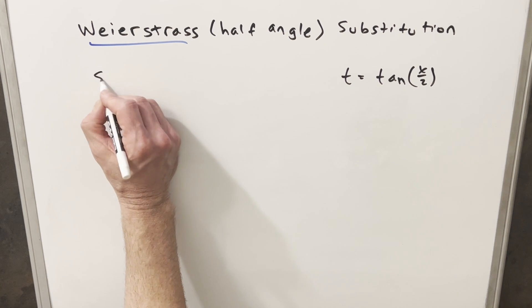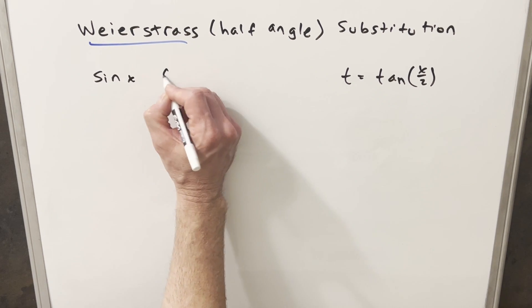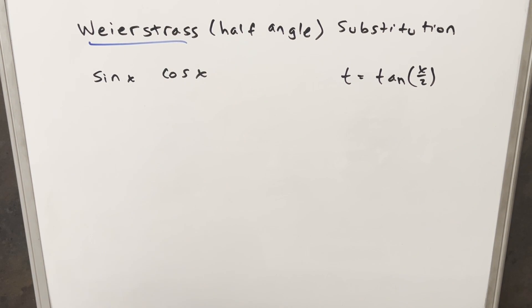So to get started with this, I'm going to assume we have an integral with either sine x or cosine x in it. Now this actually could work with other trig integrals, but for our purposes, assume that we have sine x and or cosine x in our problem.